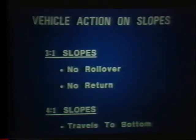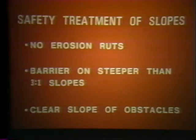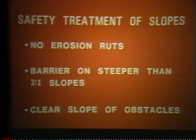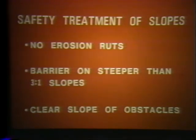On slopes steeper than 4 to 1, vehicles will travel to the bottom before steering control can be recovered. Severely rutted slopes can cause vehicle rollover. A smooth, stable slope surface is a definite safety improvement for unshielded roadsides. Barriers should be considered on slopes steeper than 3 to 1, particularly if the toe of the slope is hazardous. All appurtenances on the slope should be safety treated.